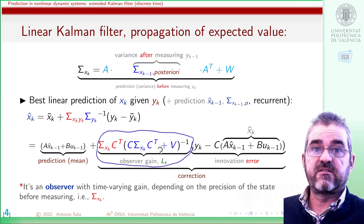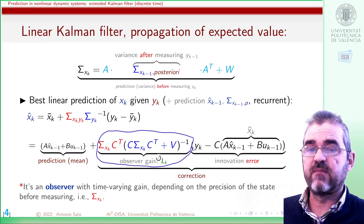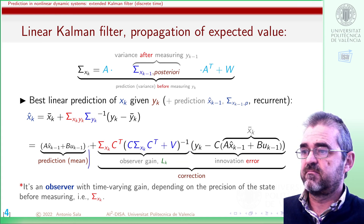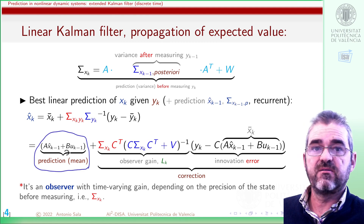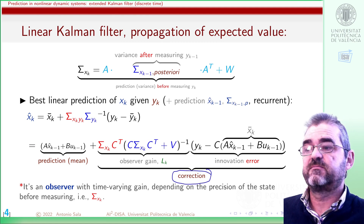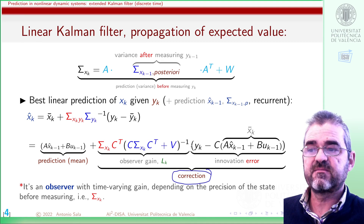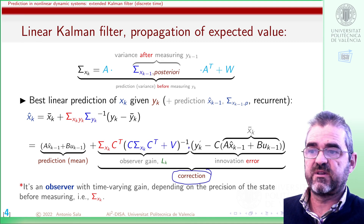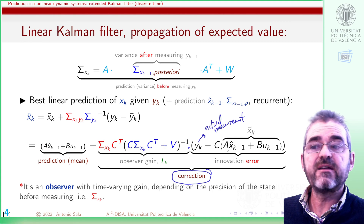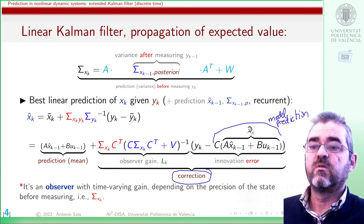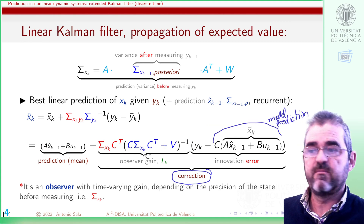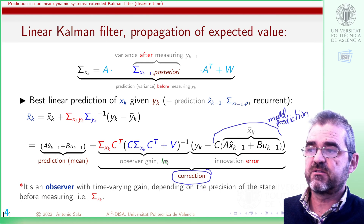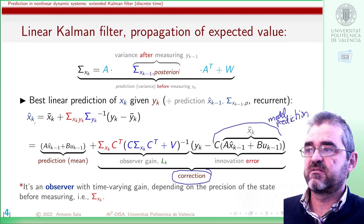So this factor is the observer gain — the Kalman gain — and then we update our open-loop prediction in mean with this correction term, which is the observer gain times the difference between what I measure minus what the model predicted. So this innovation multiplied by the observer gain is used to update my prediction.